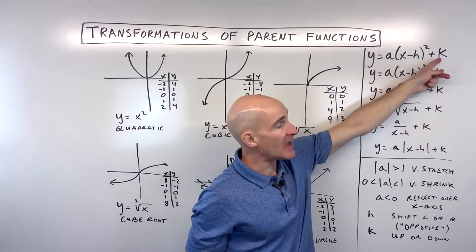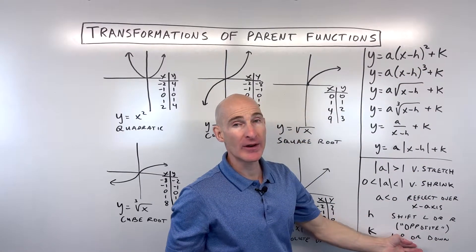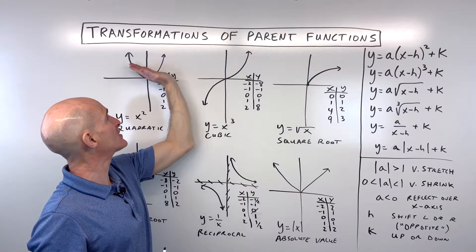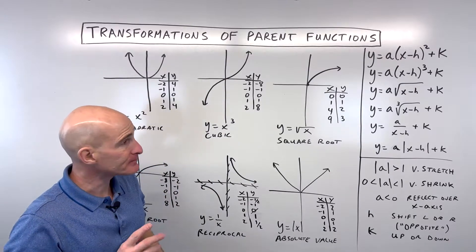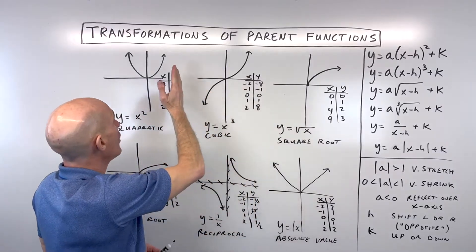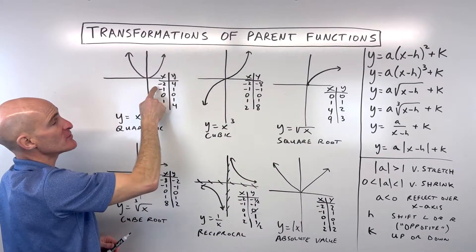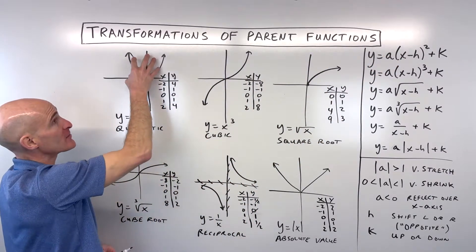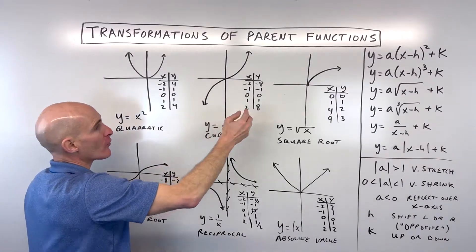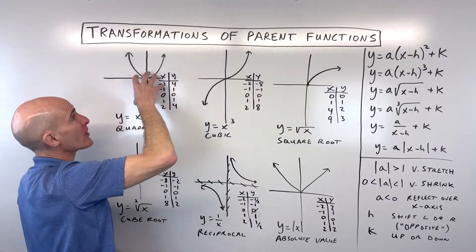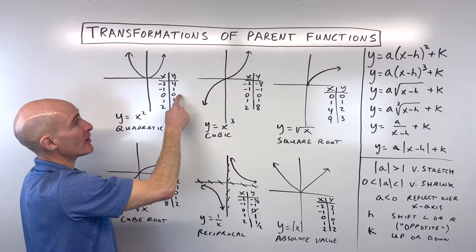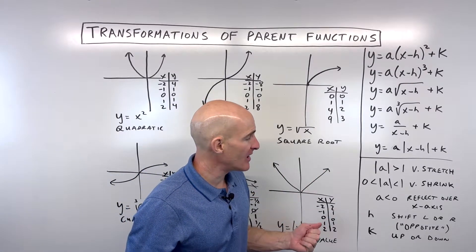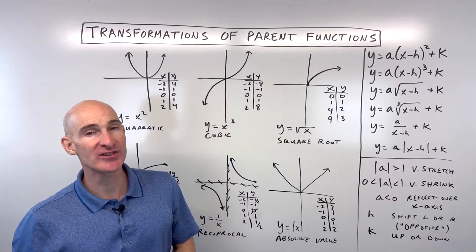If it's not grouped with the x — like the K value — it shifts the graph up or down with the same effect. If K is 5, shift up 5; if it's minus 5, shift down 5. When grouped with x, it affects the x coordinates (horizontal direction) — add or subtract from x values in the table. The K value affects y coordinates — add or subtract K from the y values. Let's dive into the examples.